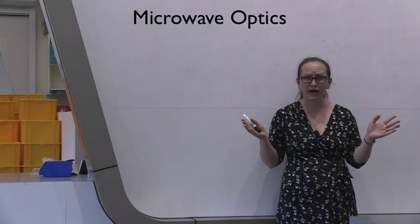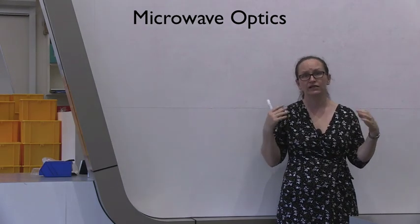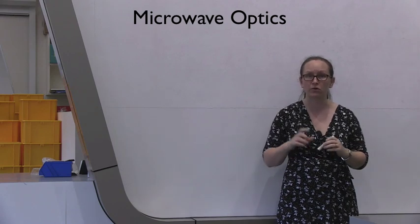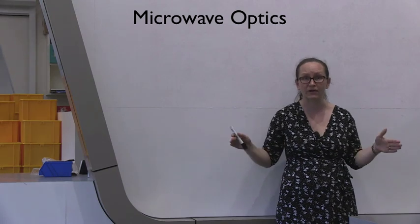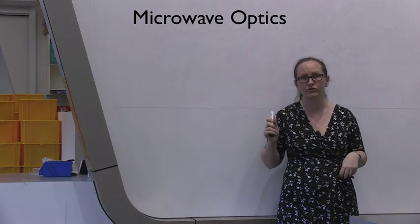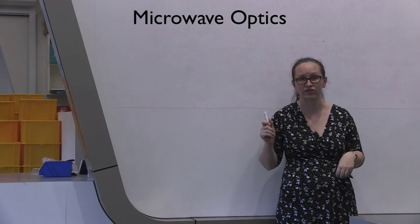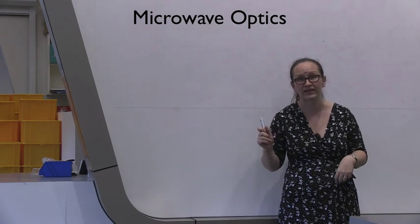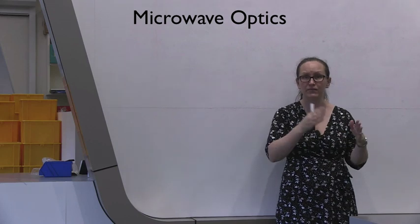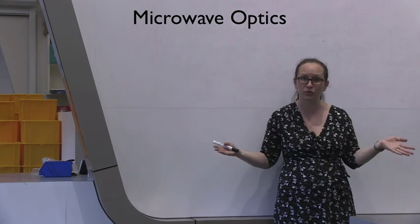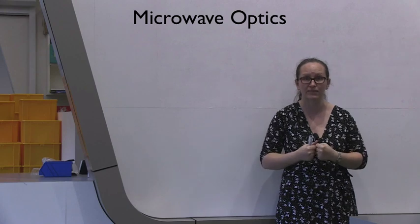So there's three parts to this experiment. In the first part, you're going to be measuring the wavelength of your microwaves. You're going to be doing this by setting up standing waves. So I'd recommend that you revise the standing waves on a string experiment from Physics 1a before coming to this lab, because you're going to have to relate maximums and minimums to wavelength in the first part of this experiment.